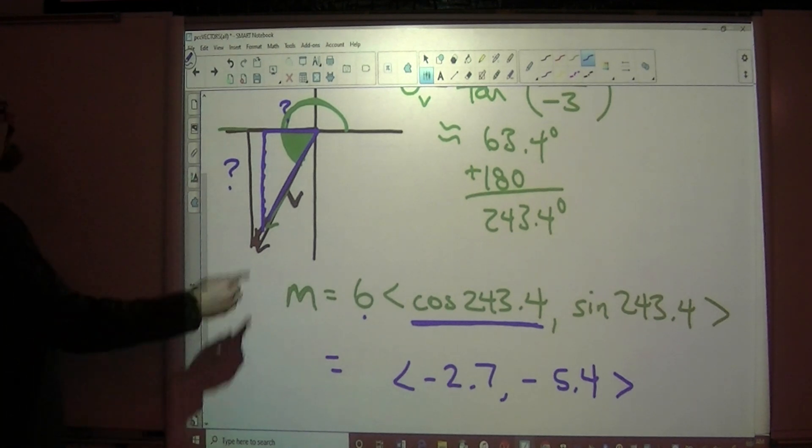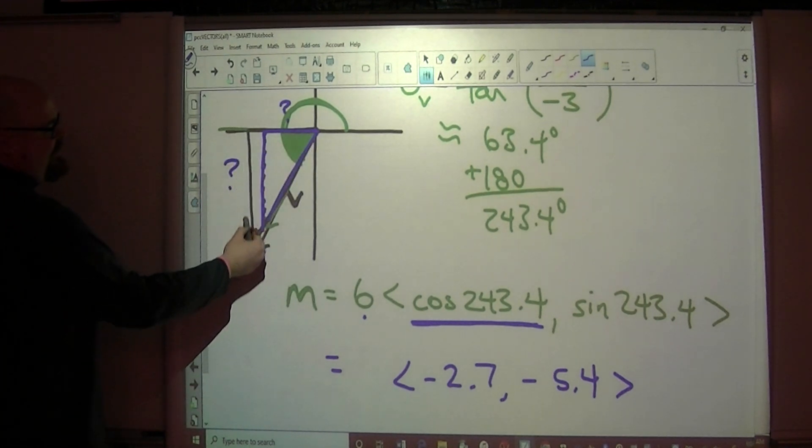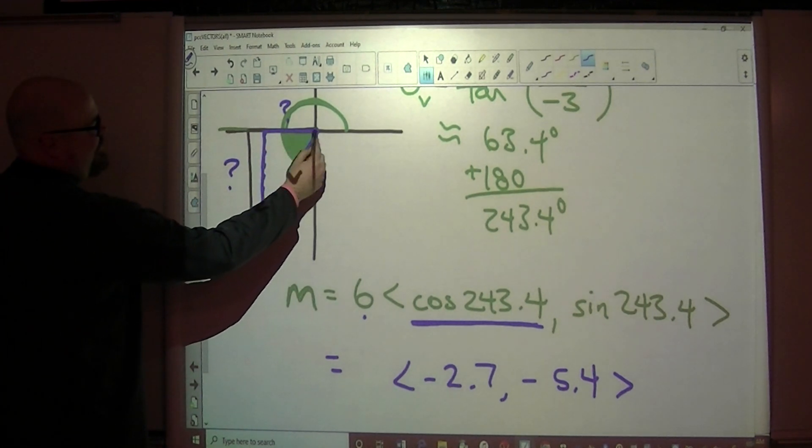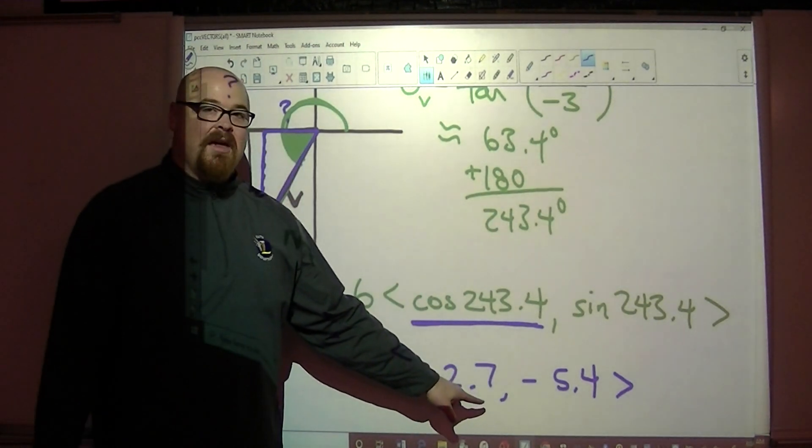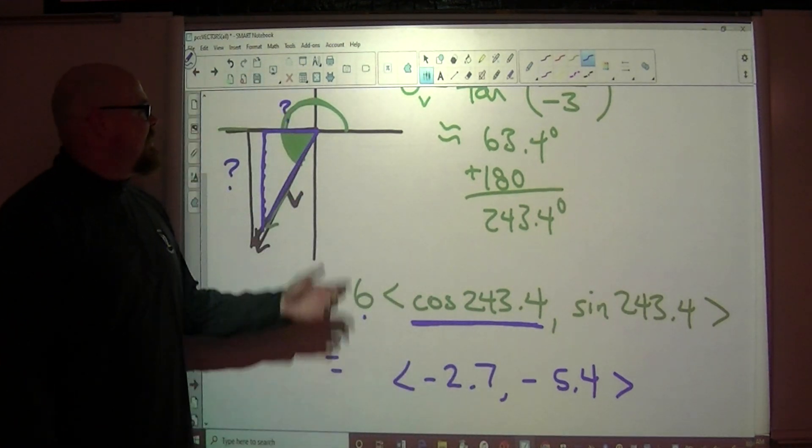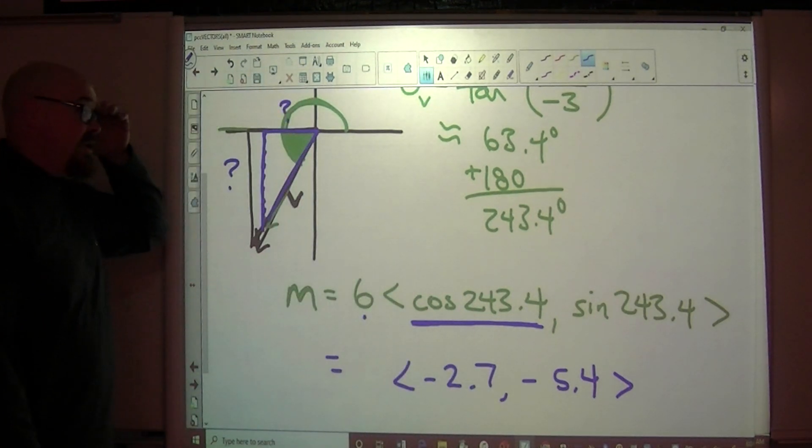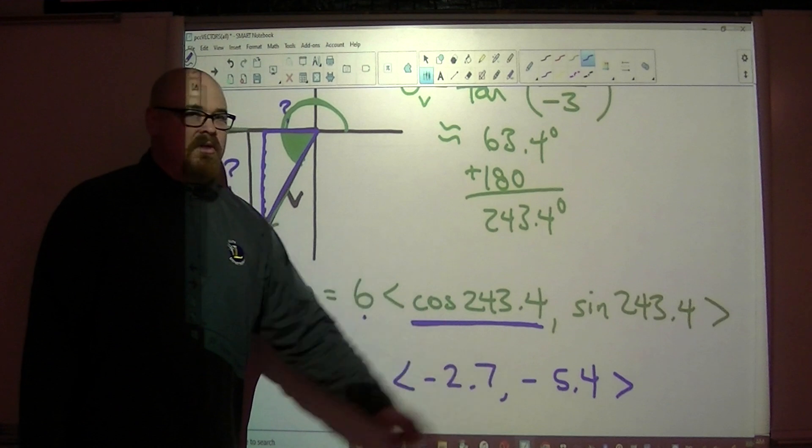Okay, so if this is 3 and this is 6, then when this is 2.7, this is 5.4, because this times two is that. So we could think of a concept of similar triangles here to come up with these components as well.